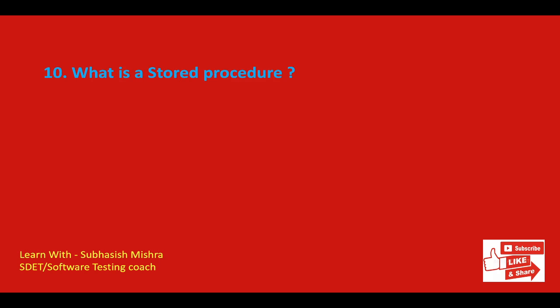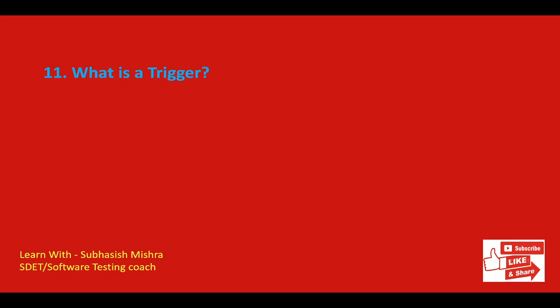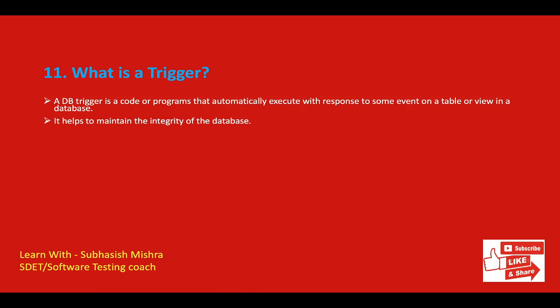What is a stored procedure? A stored procedure is a collection of SQL statements that have been created and stored in the database to perform a particular task. It accepts input parameters, processes them, and returns a single value such as a number or text value, or a result set. What is a trigger? A database trigger is code or a program that automatically executes in response to some event on a table or view in a database. Mainly, a trigger helps to maintain the integrity of the database.